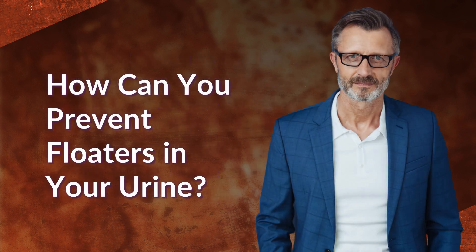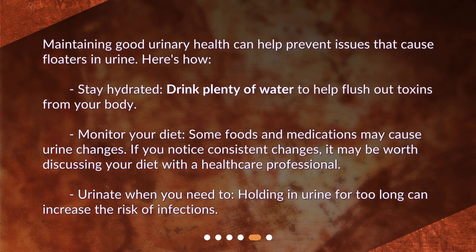How can you prevent floaters in your urine? Maintaining good urinary health can help prevent issues that cause floaters. Here's how: stay hydrated — drink plenty of water to help flush out toxins from your body. Monitor your diet, as some foods and medications may cause urine changes; if you notice consistent changes, discuss your diet with a healthcare professional. Also, urinate when you need to, as holding in urine for too long can increase the risk of infections.